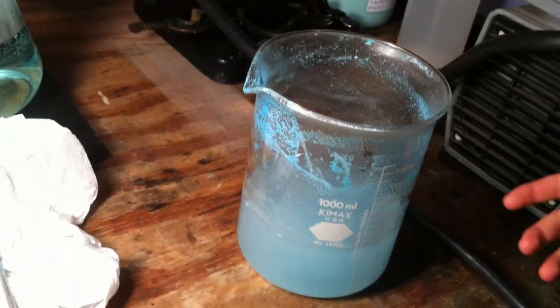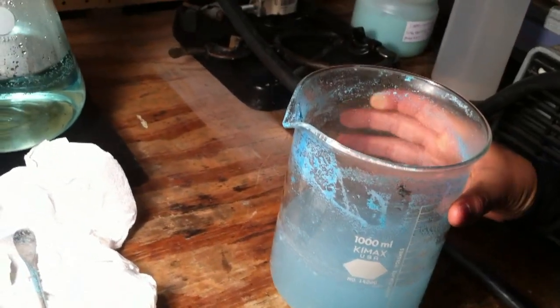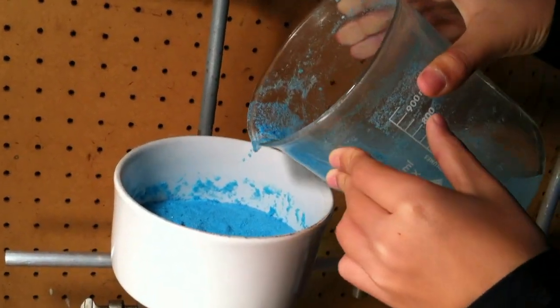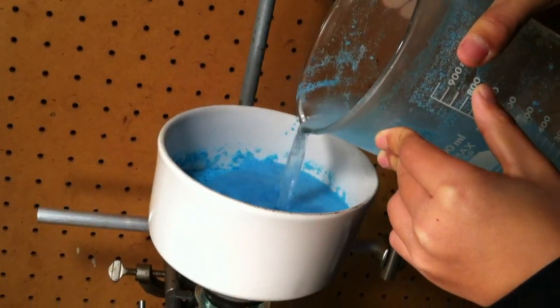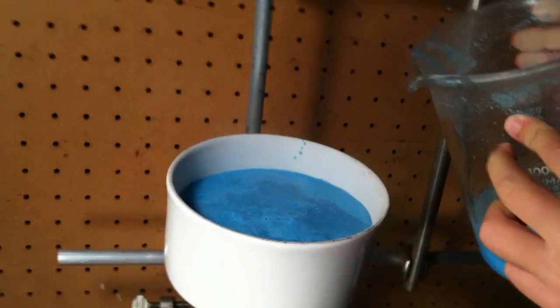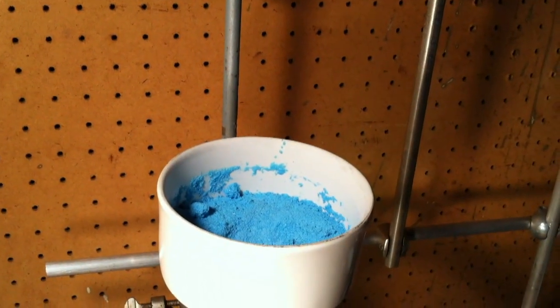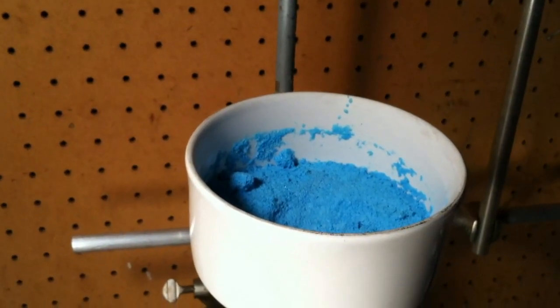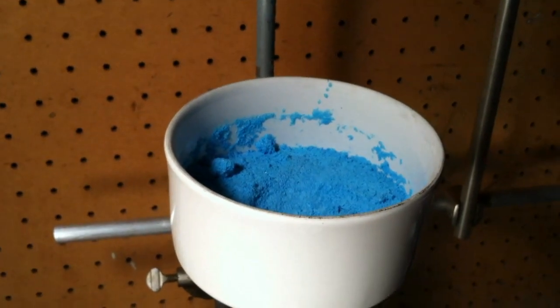Add some hot water and pour it into the Buchner funnel. Hot water will get rid of the benzoic acid. Leave the vacuum pump on until all the copper benzoate has dried.